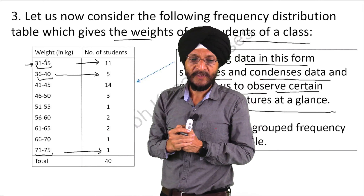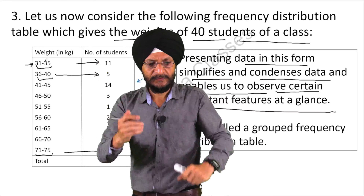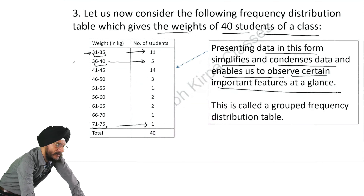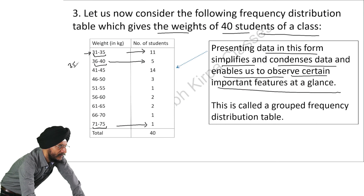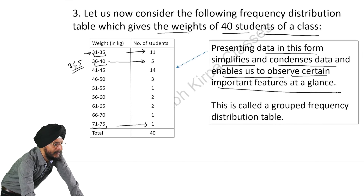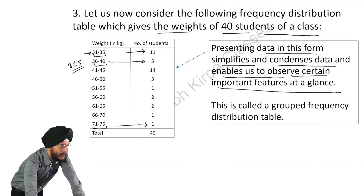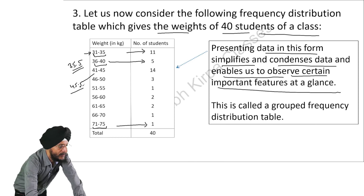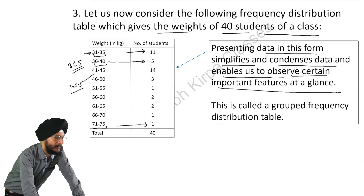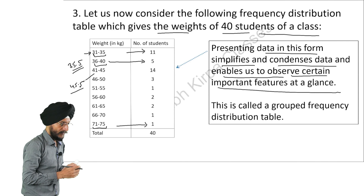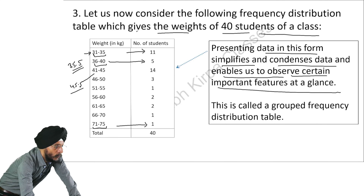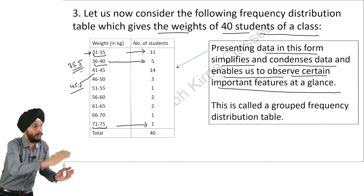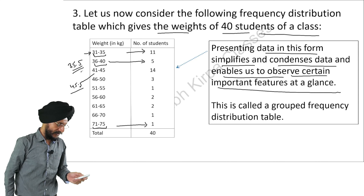But here is again a problem. Suppose a new student comes with a weight of 35.5 kg, and another student has a weight of 45.5 kg. Now where will you put them? Because there is no group where we can add these 2 students, since there is a gap of 1 kg in each class group.